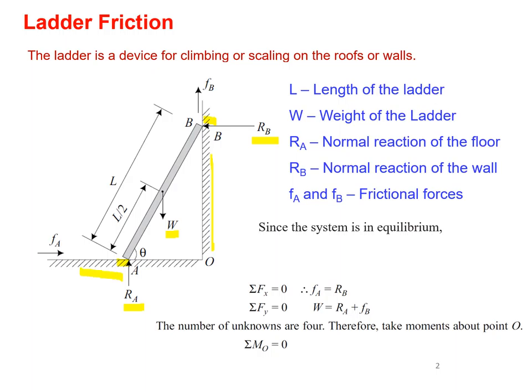Since the ladder has a tendency to slide down, point A will move outward and point B will come down. Because of this, the frictional force at point A (FA) acts in the inward direction, and at point B the frictional force FB acts opposite to the direction of movement. So the forces acting on the ladder are: self-weight W, reactions RA and RB perpendicular to the surfaces at A and B, and frictional forces FA and FB.